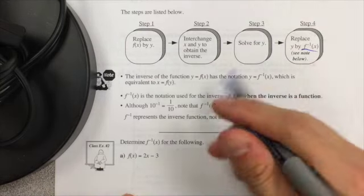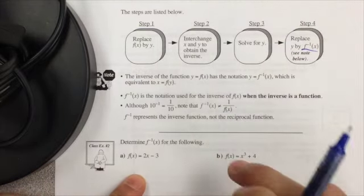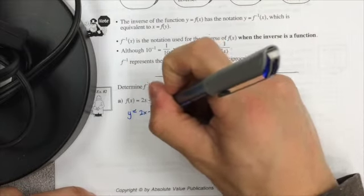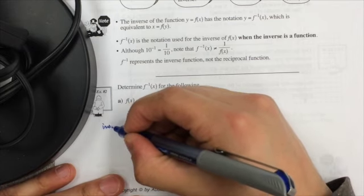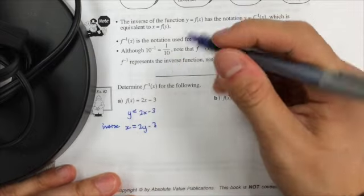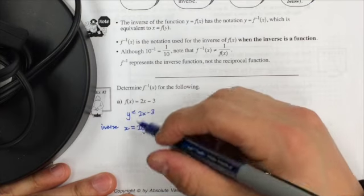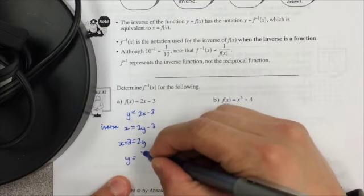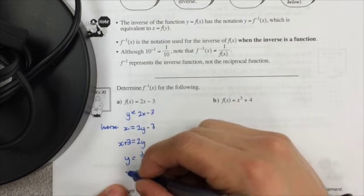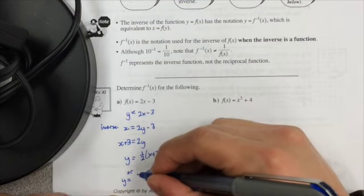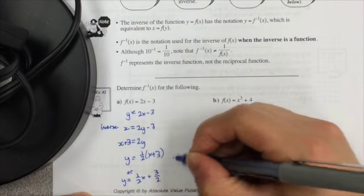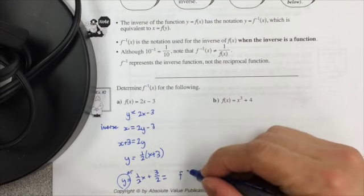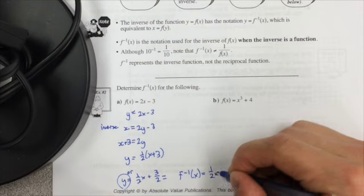Let's try the first example. Replace f(x) by y and set it equal to 2x minus 3. Then interchange x and y for the inverse: x equals 2y minus 3. Solving for y: x plus 3 equals 2y, divide by 2, giving y equals one-half x plus three-halves. The final step is to replace y with f inverse of x, so f inverse of x equals one-half x plus three-halves.